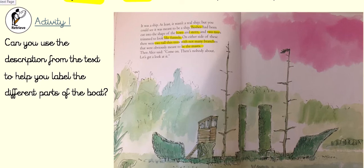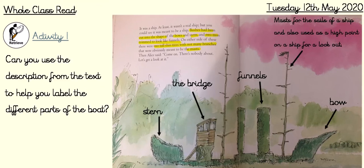Are you ready? Here are your answers. We've got the bow — that's the front of the ship — and the stern, which is the back of the ship. I had to look that bit up.